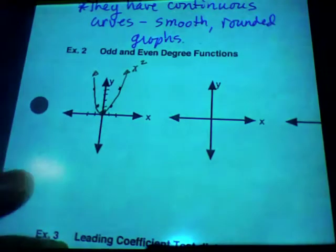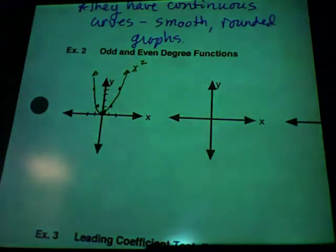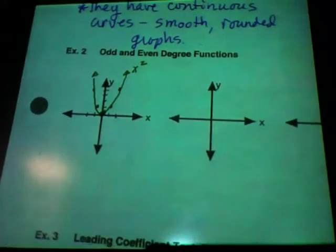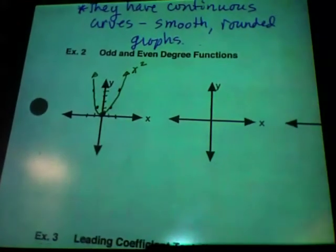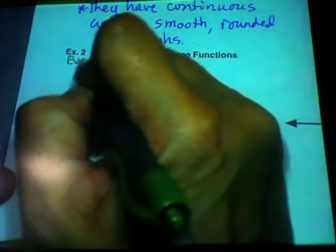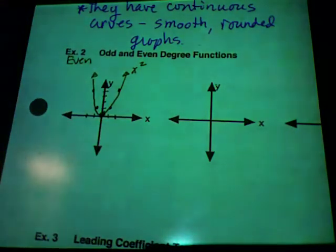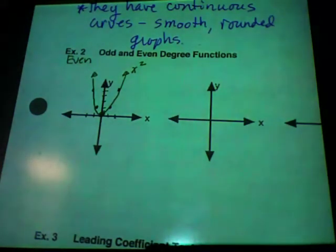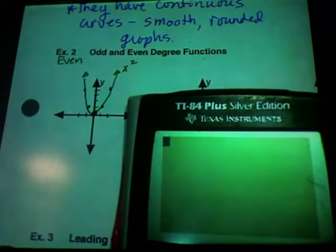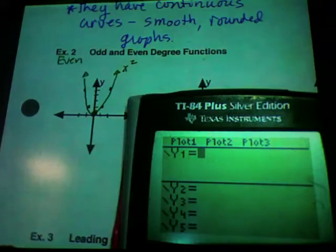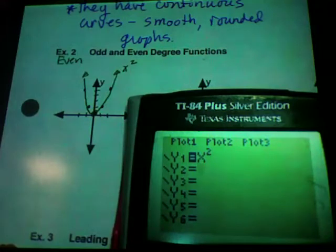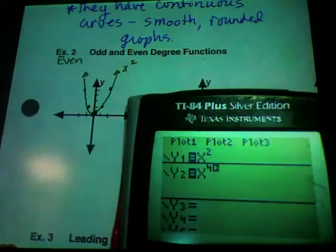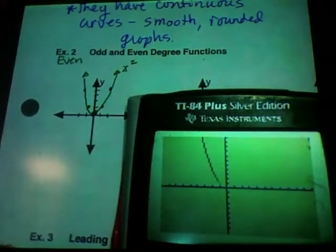So for this one, if I did y equals x squared, I would have a point at (1, 1), (-1, 1), (2, 4), and (-2, 4). Agreed? This is x squared. We're going to look at the difference between odd and even degreed functions. Would you agree that that is an even degree? Right? So this is even.